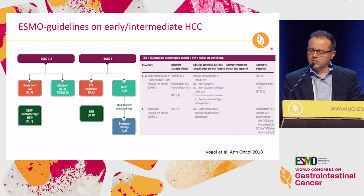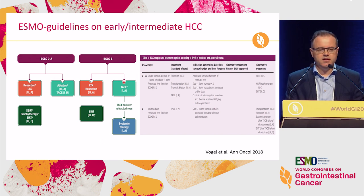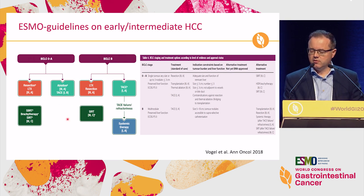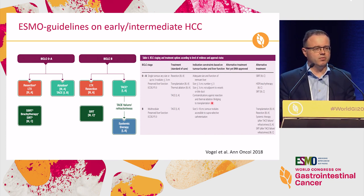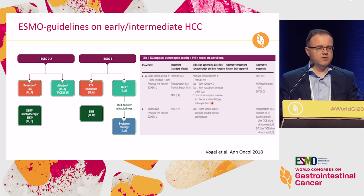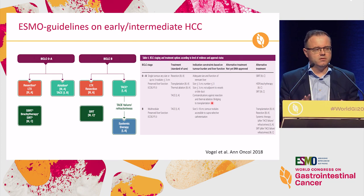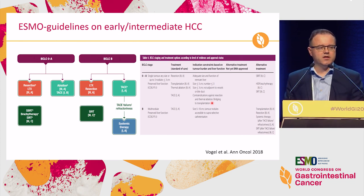You have ablation, resection, and here TACE in the intermediate stage. In contrast with the BCLC, you also have resection and transplant coming into an intermediate stage, and then you have the options on brachytherapy and SIRT in the picture. Please refer to the accompanying table in the ESMO guidelines, where you have the standard of care and then a few options. The setup of these guidelines follows a strict methodology in ESMO, but we make no compromise regarding the evidence.